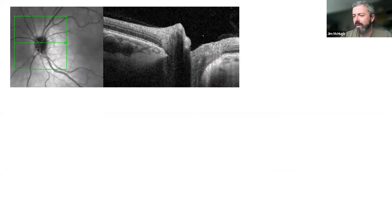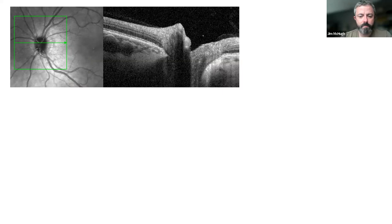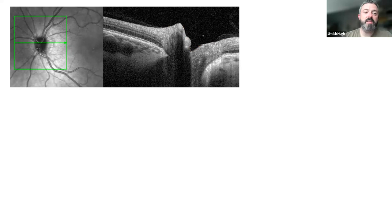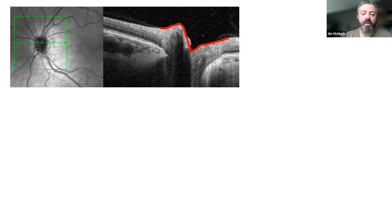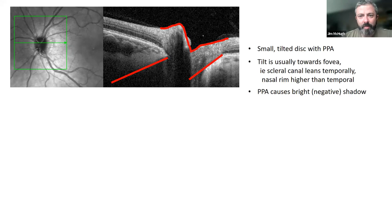We use OCT a lot — it's our number one medium for working out whether a disc is normal or not. This is a slice, a profile through an optic disc: you can see the en-face picture on the left and then the slice on the right. It's a small disc and it's a tilted disc as well, giving a distinctive zigzag profile. The canal, which should go straight backwards on OCT, goes obliquely instead — that's a sign of tilt. You can also see peripapillary atrophy on the downhill temporal side, visible on OCT as a bright signal because light penetrates the atrophic area.